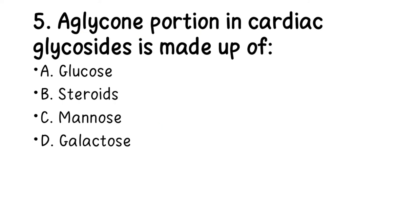Number 5. The glycone portion in cardiac glycosides is made up of: A. Glucose, B. Steroids, C. Mannose, D. Galactose. The right answer here is B, Steroids. You have steroids in the glycone portion of cardiac glycosides.